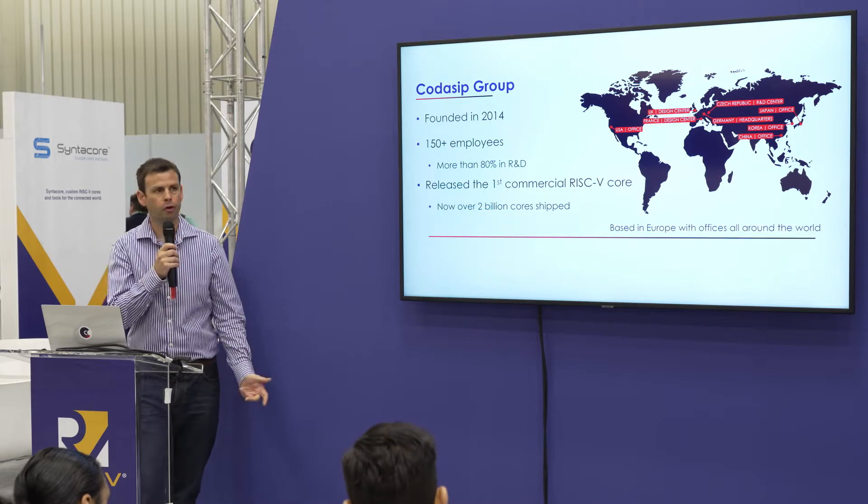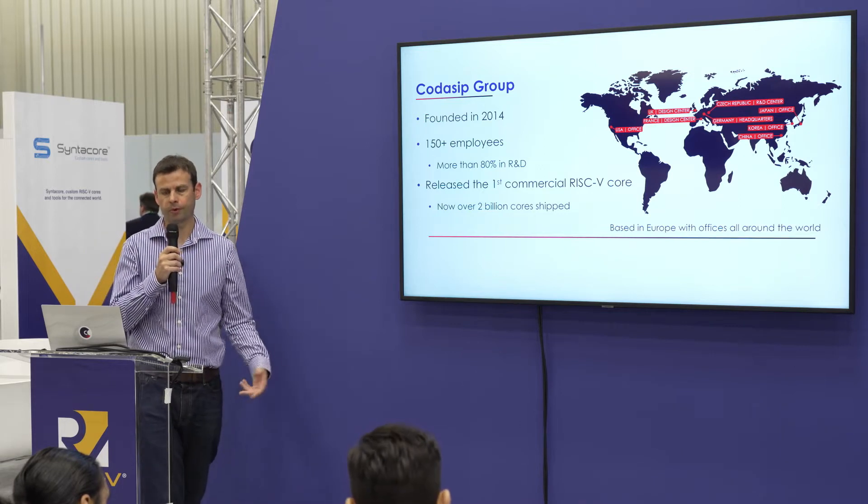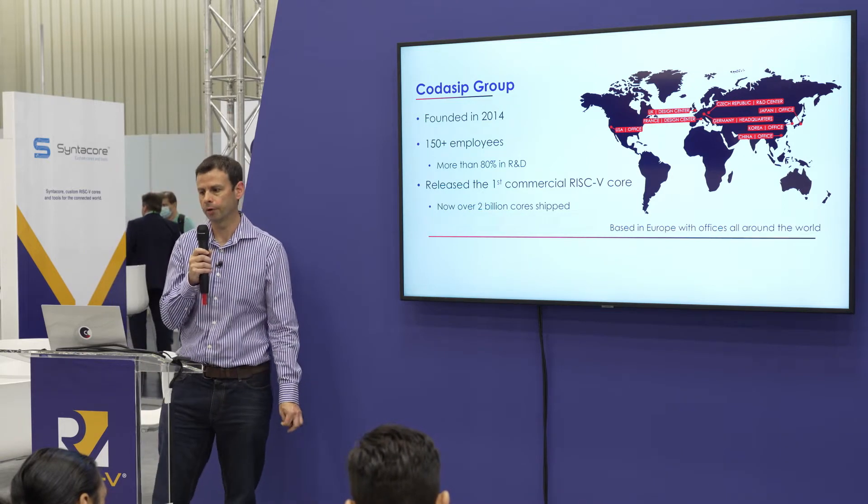To introduce Codasip: we were founded in 2014, so we've been around for a little while. We were the first commercial vendor of RISC-V IP core. We're now 150 people, growing very rapidly, primarily across Europe. All of our R&D is in Europe and we have sales and commercial offices around the world.